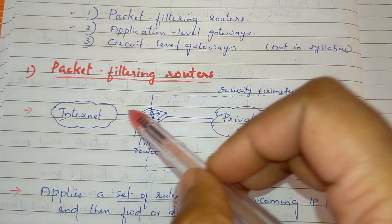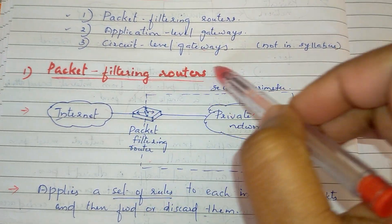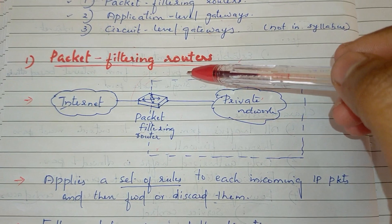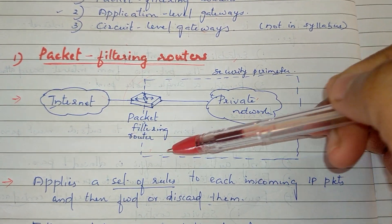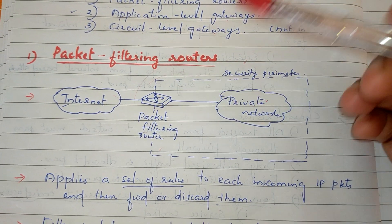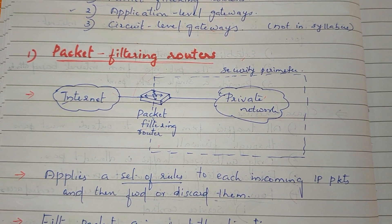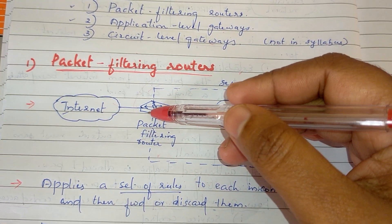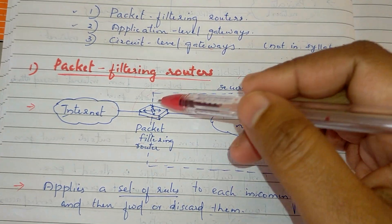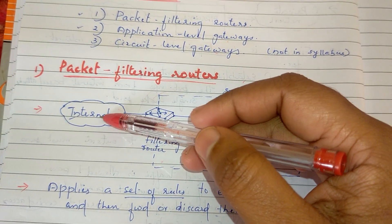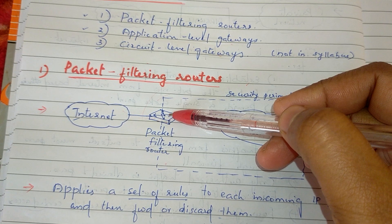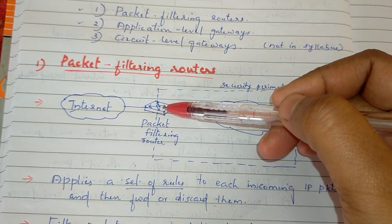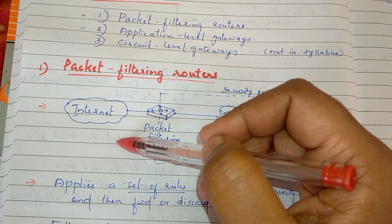The Packet Filtering Router is a set of rules. In the outside world, there are a few packets. It applies rules to your incoming packets. In the Internet, there are a few IP packets. In this filter, there are a few rules. Depending on the rules, the packet is going to be either forwarded or discarded.